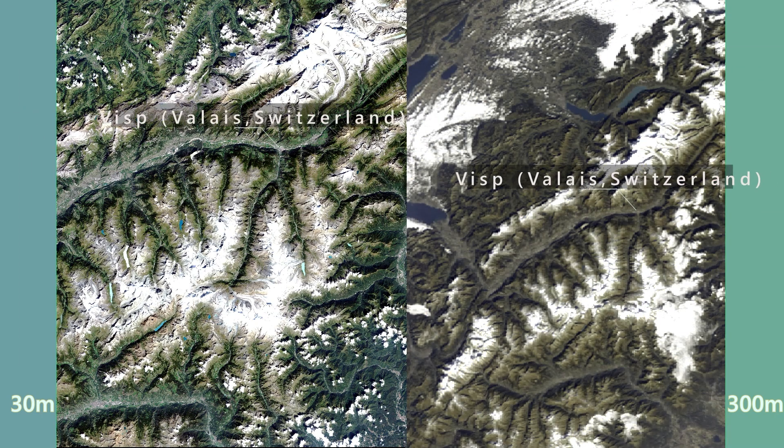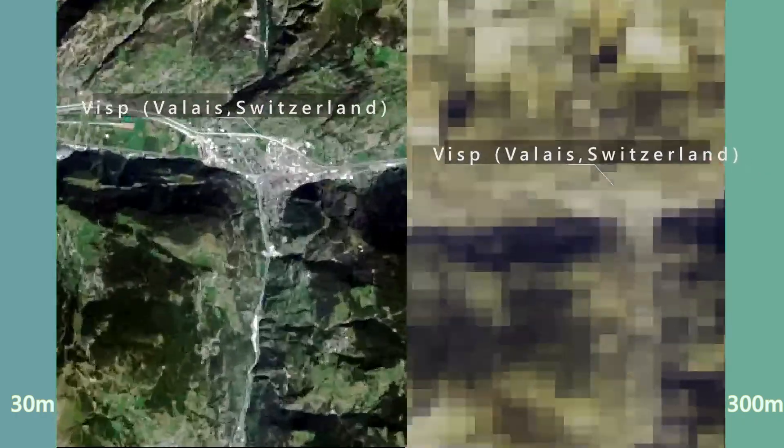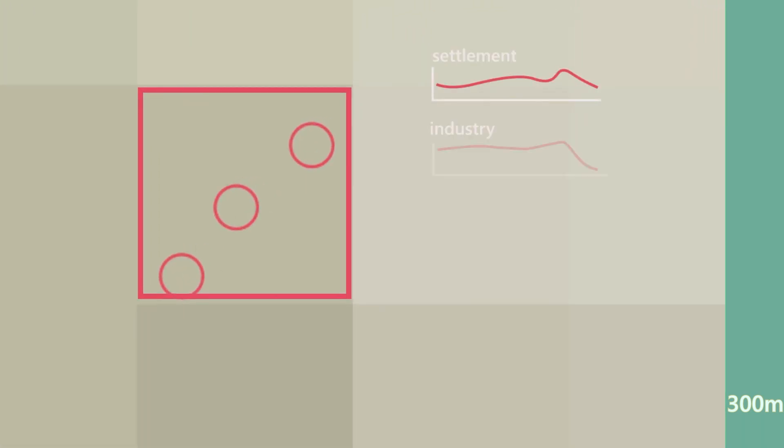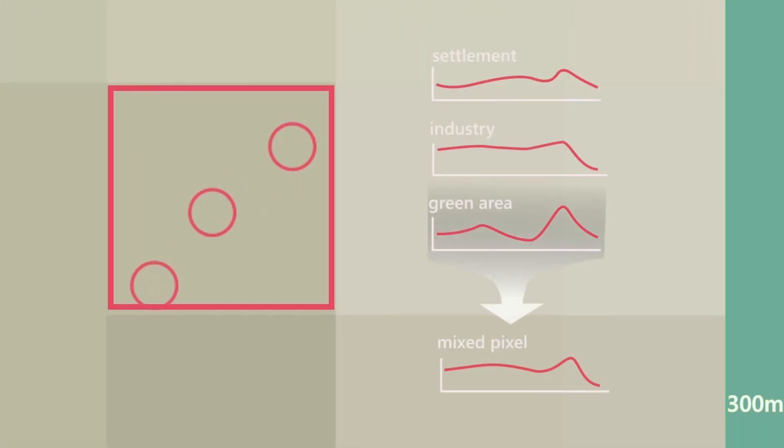The lower the spatial resolution, the more frequently objects close to one another are mapped together in one pixel. Since a pixel contains the reflection values of the displayed objects, the value in raster cells with several objects then corresponds to the mean value of the reflection values of the different objects. And thus, a mixed pixel of not one, but of several surfaces is created. With a rising number of mixed pixels, the distinction of different areas in an image becomes more difficult.